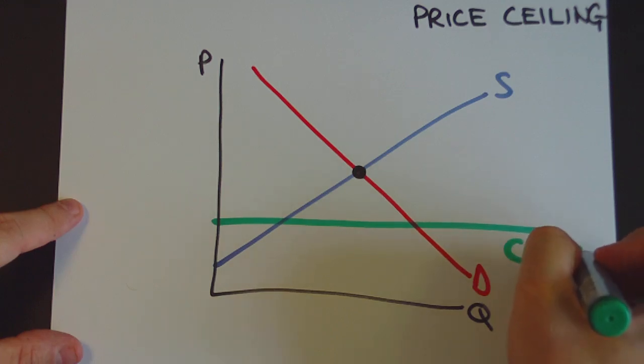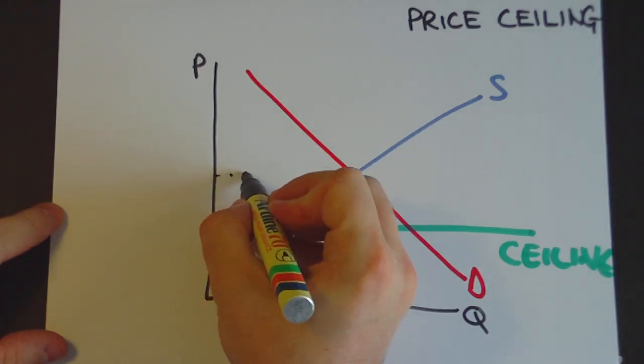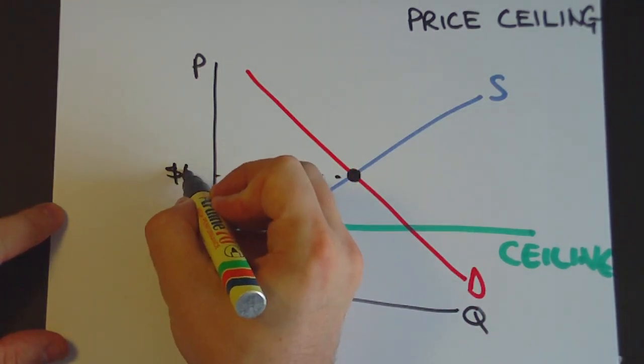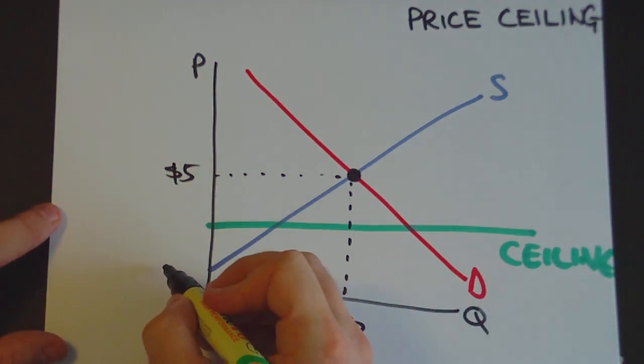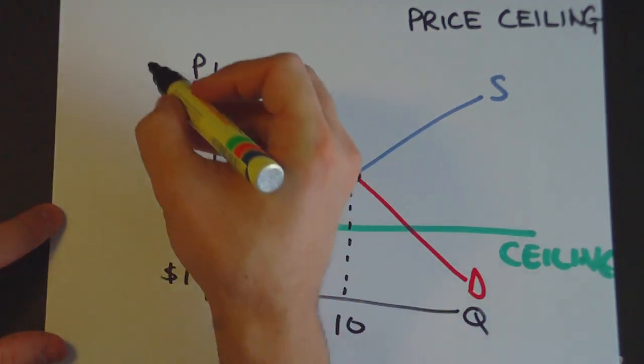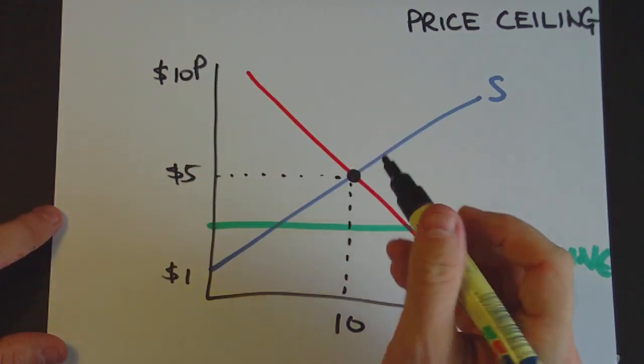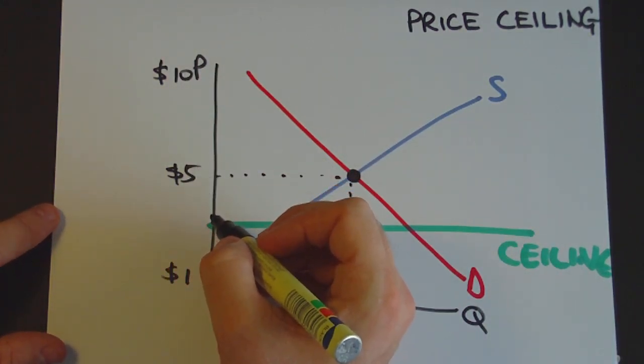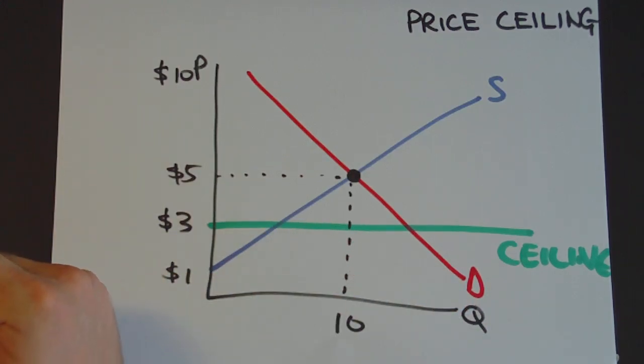It's a ceiling at this price down here. The equilibrium price we've been assuming is $5, equilibrium quantity is 10, this intersects over here at $1, and the demand curve intersects at about $10. So let's assume that this price ceiling here is roughly about $3.